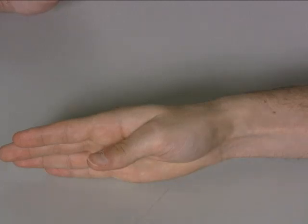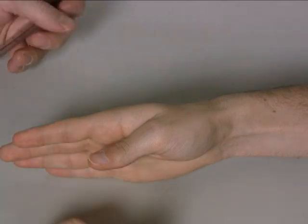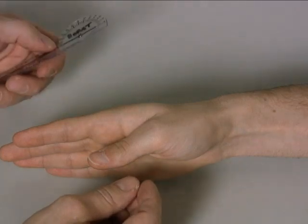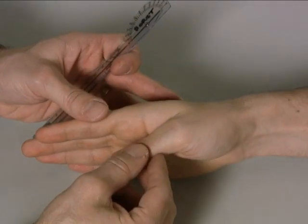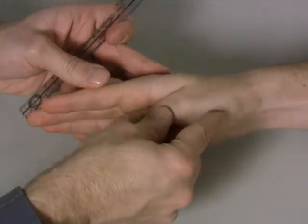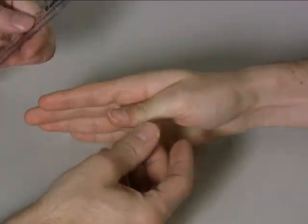To measure thumb carpometacarpal joint palmar adduction to palmar abduction, the starting position is with the hand on the ulnar side. The thumb is adducted to the palmar aspect of the hand.